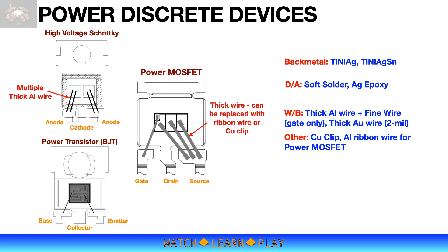The illustration on the left is a dual Schottky diode. Each diode is wire bonded using thick aluminum wire with a diameter of 15 mil or 20 mil. The next illustration is a power MOSFET with multiple thick aluminum wires bonded on the source pad. Similarly, thick aluminum wire is used to bond a power bipolar transistor. Because of larger die size and bond pads, aluminum ribbon wire or copper clip are other options for power MOSFETs for better device performance.